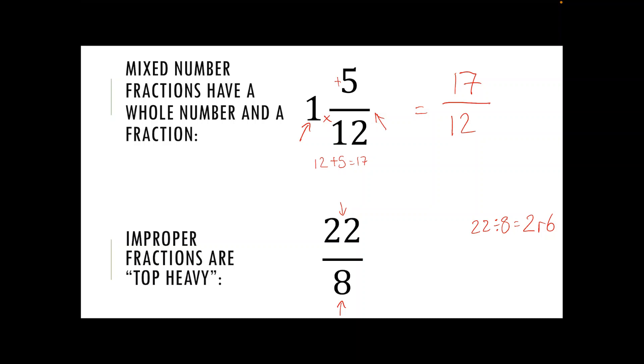So here my two becomes my whole number part. I can get two whole eights out of 22 and it's going to leave me with six eighths.